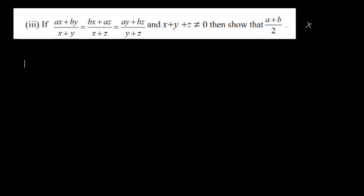Next problem: (ax+by)/(x+y) = (bx+az)/(x+z) = (ay+bz)/(y+z), and x+y+z ≠ 0. Then show that each ratio equals (a+b)/2. This question seems incomplete as stated, so we skip it for now.